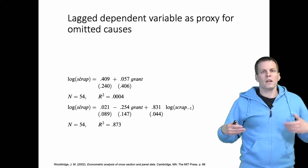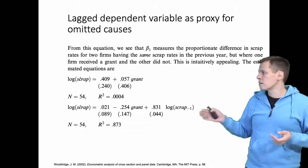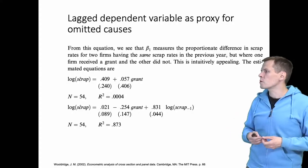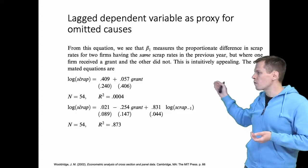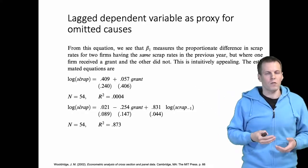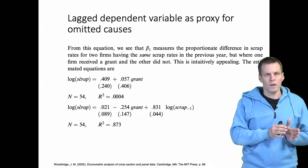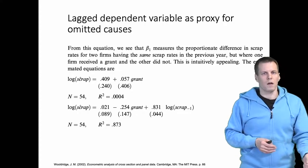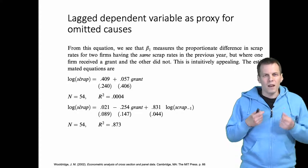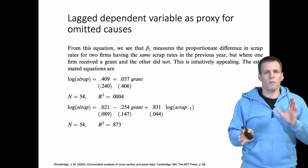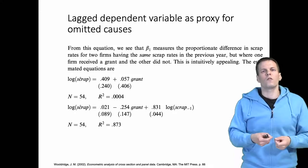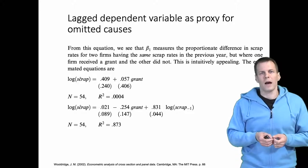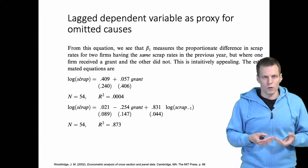How do we interpret this model? Woolridge states that Beta 1 measures the proportionate difference in scrap rates for two firms having the same scrap rates in the previous year, where one received a grant and the other did not. You control for initial differences and compare two firms with the same initial scrap level. This sounds very appealing. There are some limitations, but generally controlling for past levels of something that persists over time is worth considering in every longitudinal study.